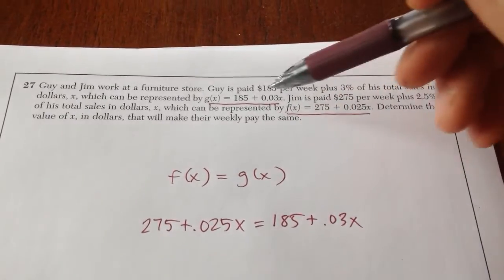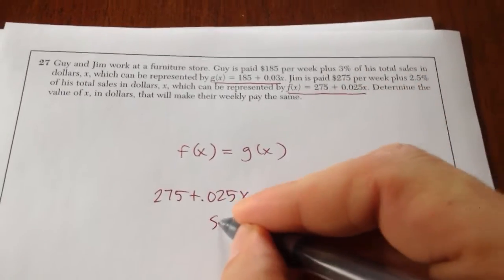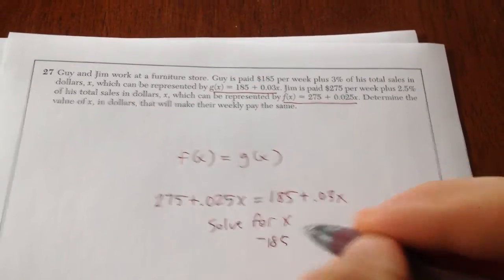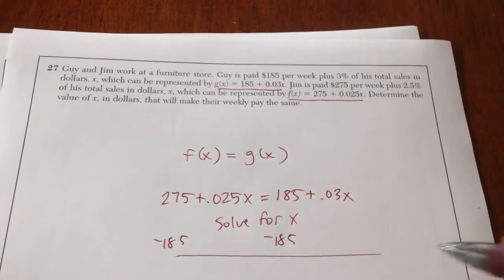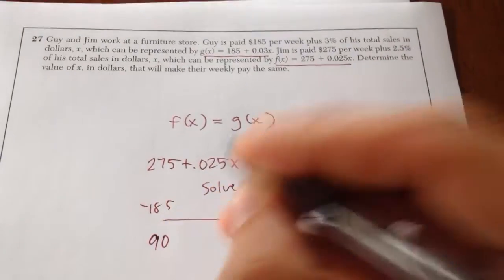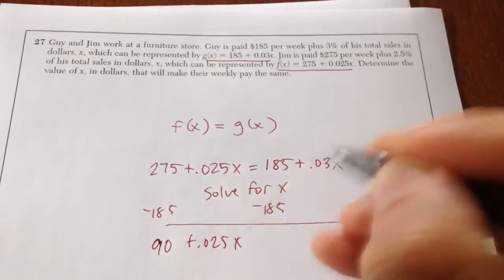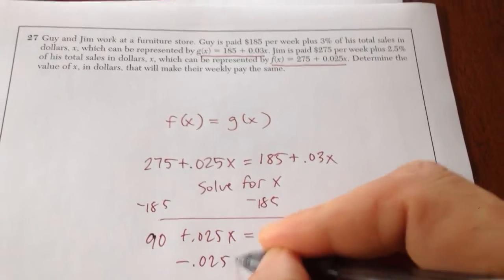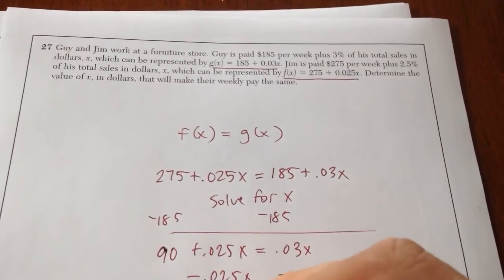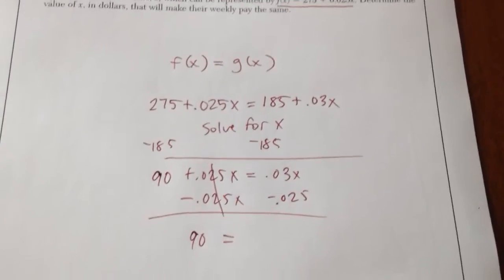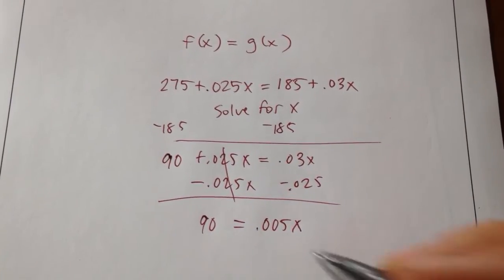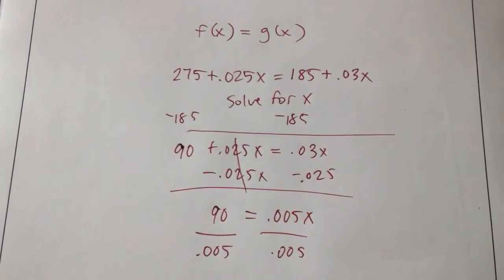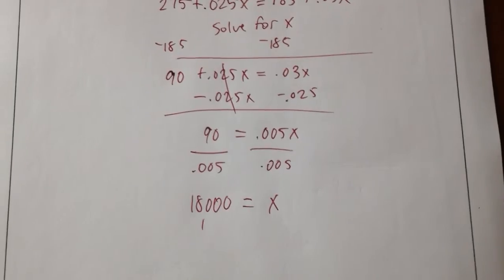So therefore, we're going to set these two equations equal. And then we're going to solve for x. So I subtract 185. I get 90. Subtract 0.025x. Subtract 0.025x. I get 90 equals 0.005x. I divide both sides by 0.005. My answer is 18,000.